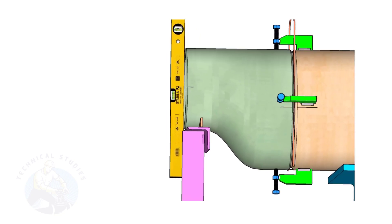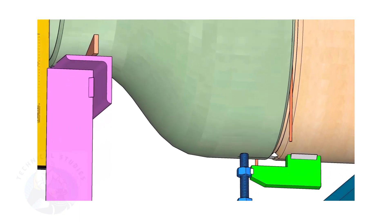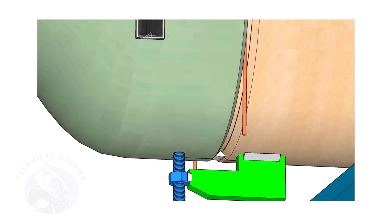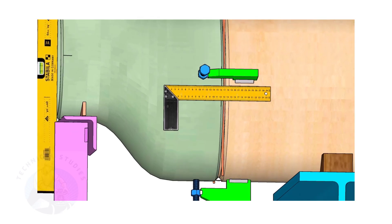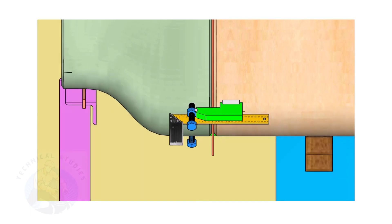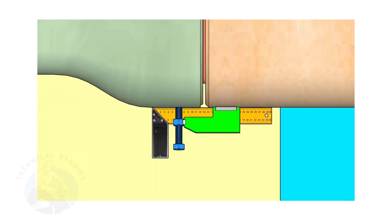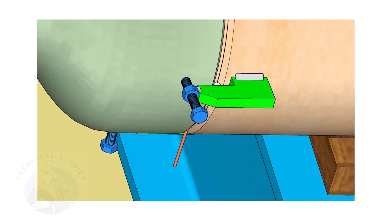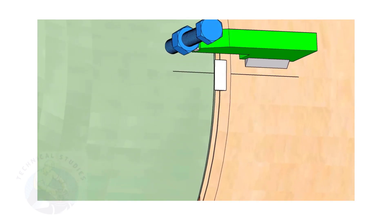Tack weld in the bottom side of the joint. Correct the straightness of the joint on both sides. If required, remove the gap rod. Tack weld on both sides.